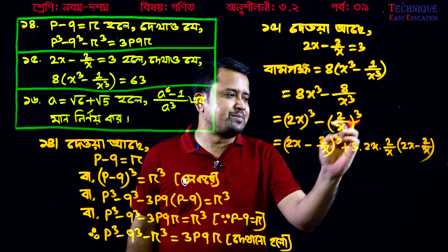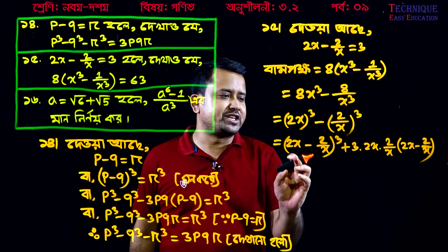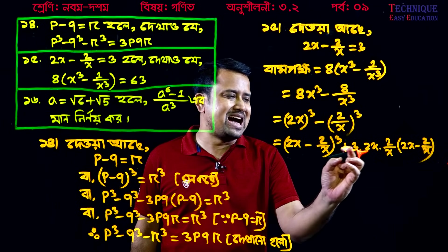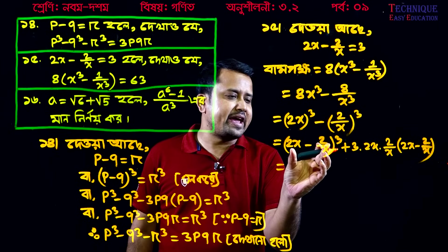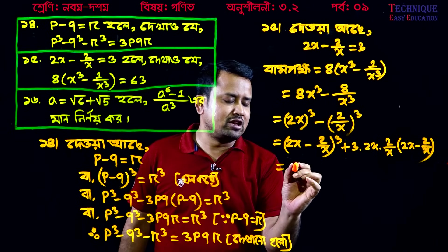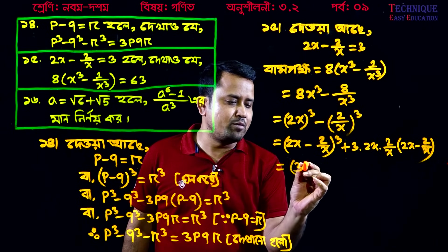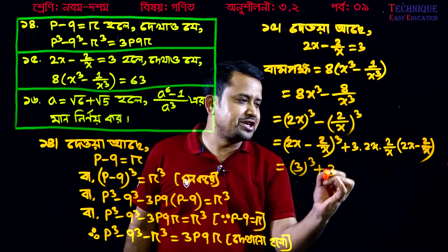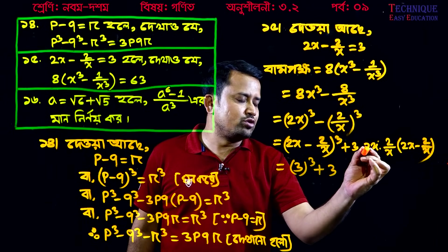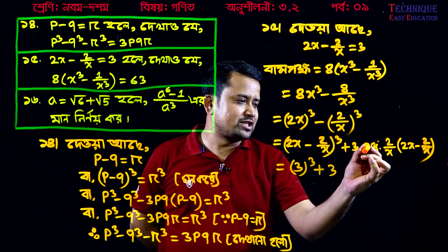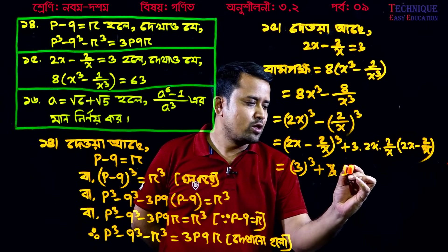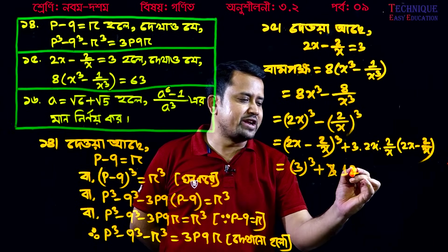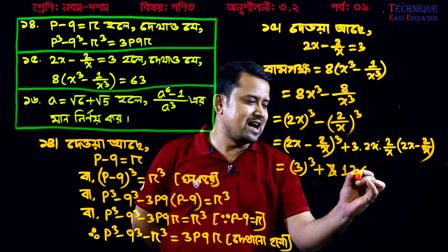Look — a cube minus b cube equals a minus b whole cube plus 3ab into a minus b. Here a equals 2x, so we get 2 cubed which is 8, times 3 gives 6; then 3 times 2 is 6, times 8 gives 12. Computing: 3, 2, 6, 8, 2, 12.